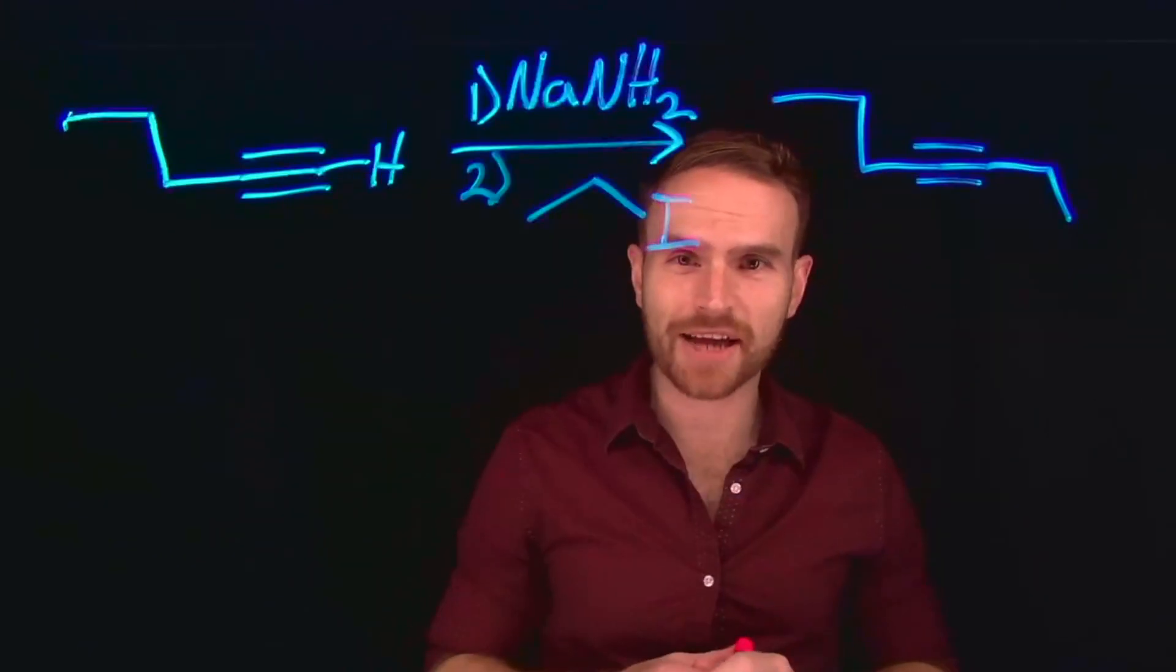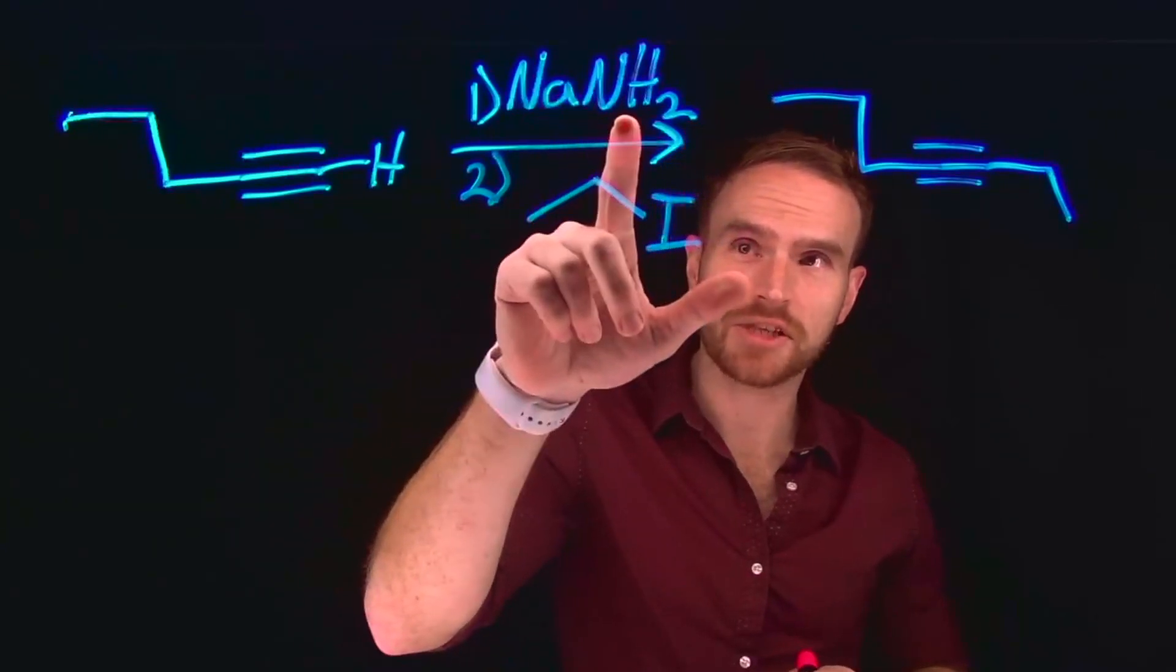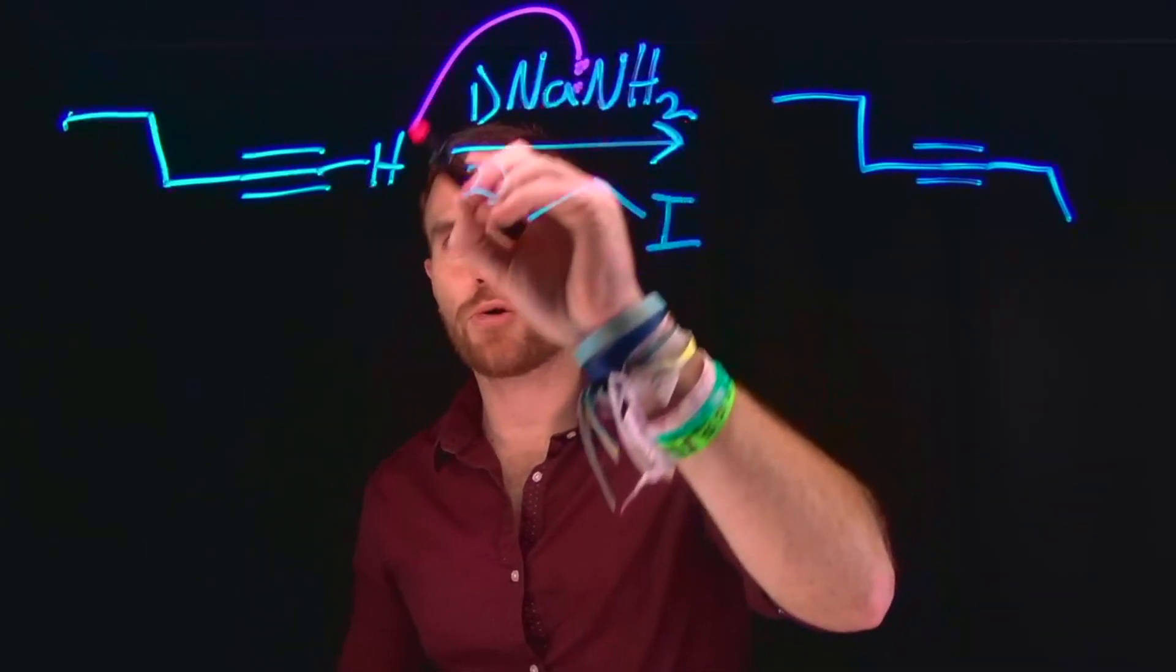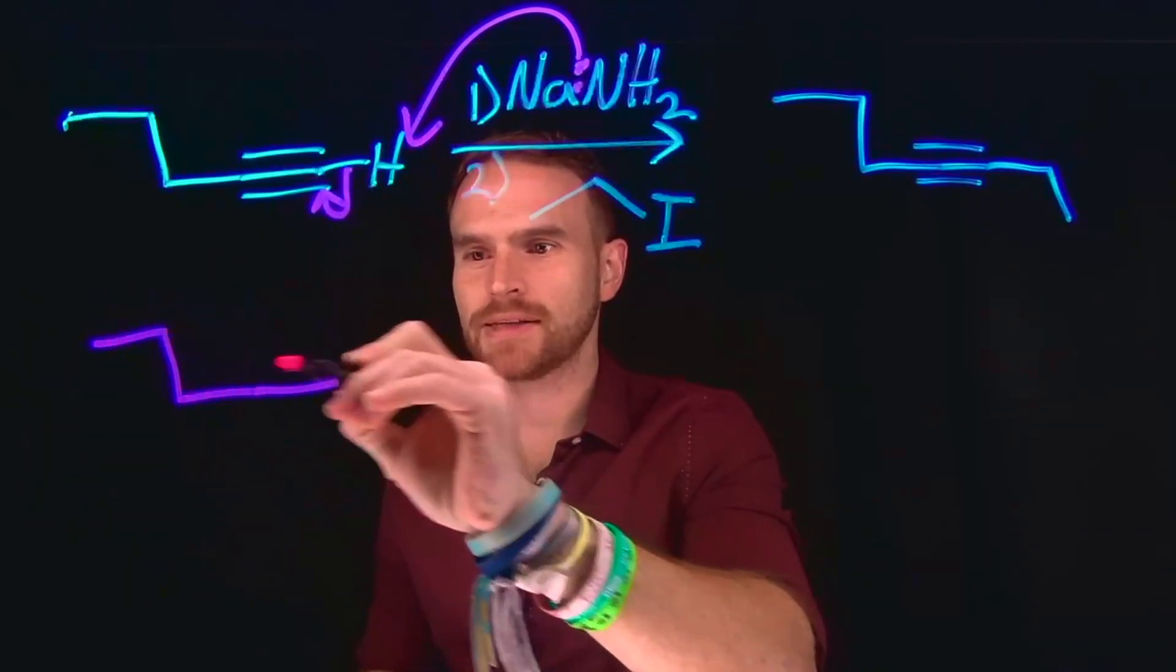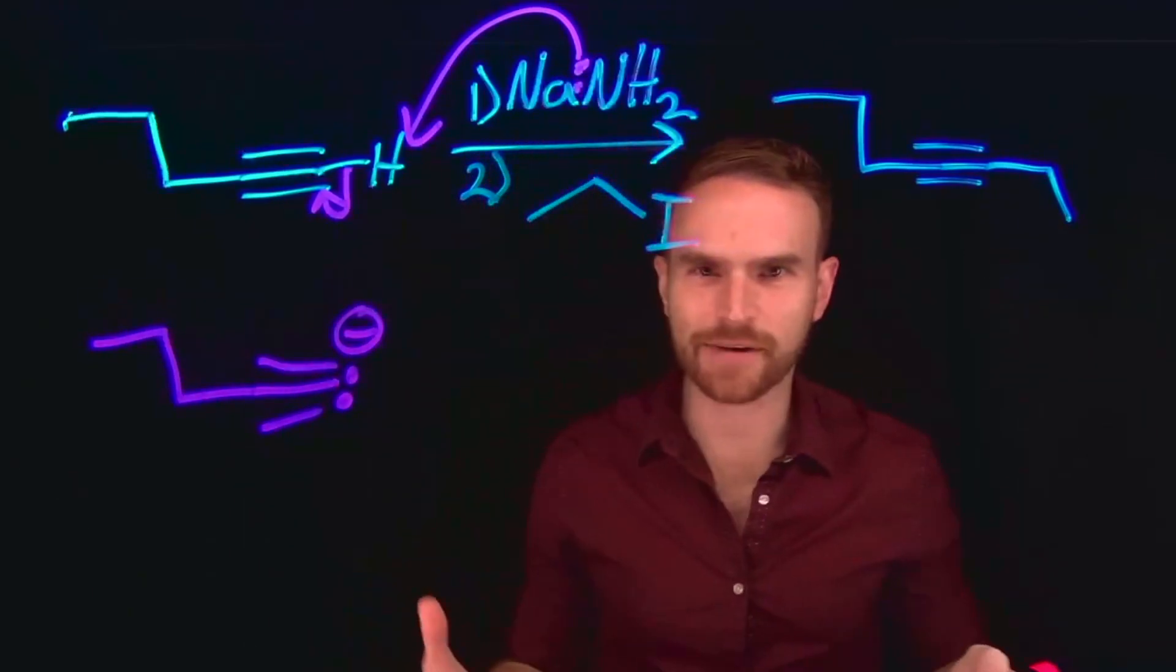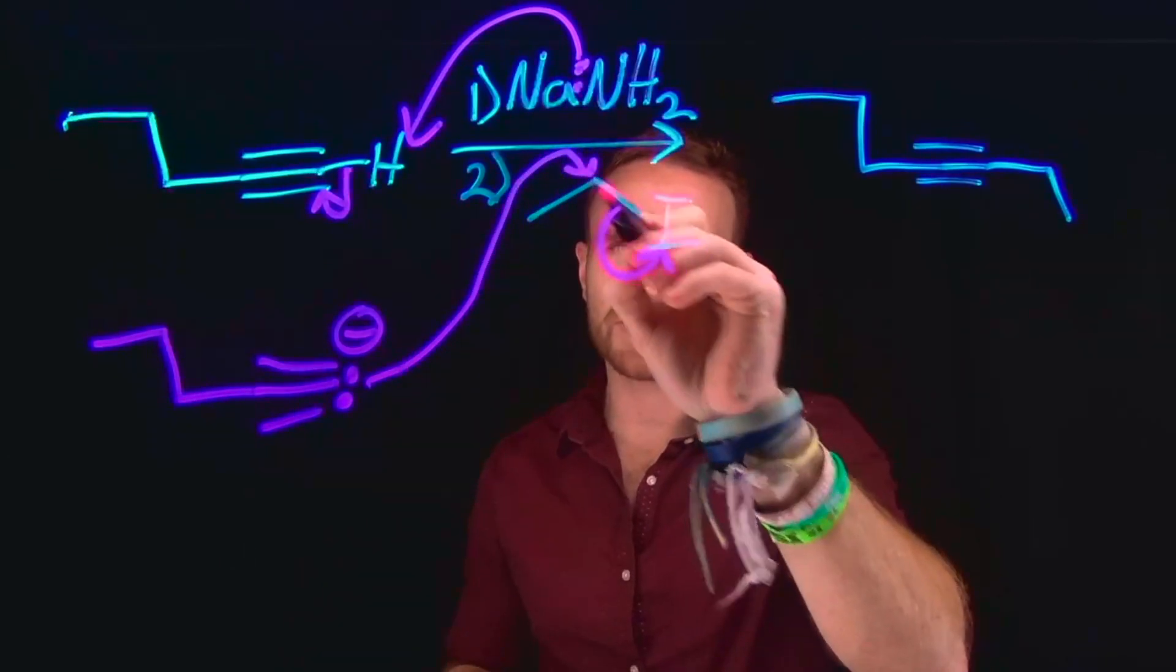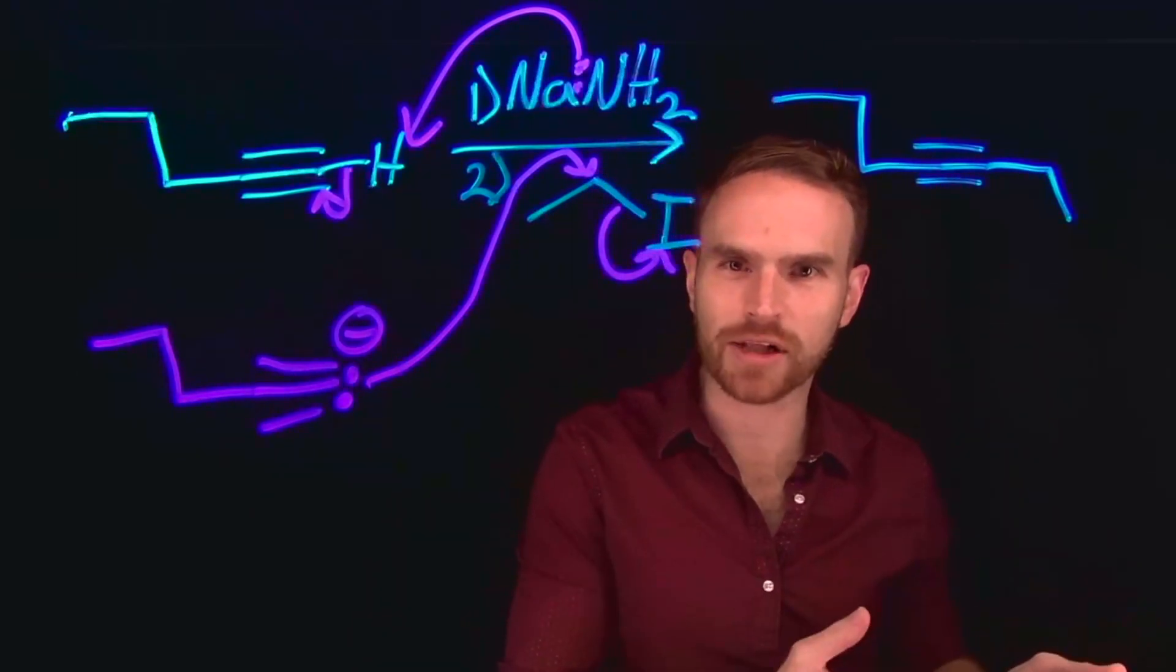This is the overall reaction or transformation known as alkyne alkylation. We introduce a base, typically sodium amide or NaNH2. And this base can deprotonate the terminal hydrogen position, creating that carbanion, where the intermediate would look like this, where the carbon has a lone pair and has now become negatively charged. And from here, this will do a substitution reaction, specifically an SN2 at this carbon position, kicking off the iodide to give us our overall transformation known as alkyne alkylation.